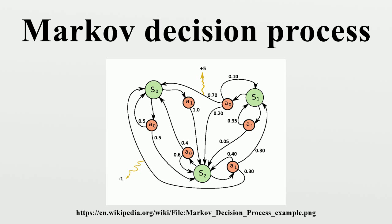Modified policy iteration: step one is performed once, and then step two is repeated several times. Then step one is again performed once and so on. Prioritized sweeping: In this variant, the steps are preferentially applied to states which are in some way important, whether based on the algorithm or based on use.